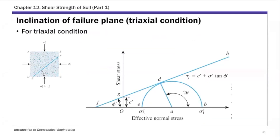Another thing to mention for the Mohr-Coulomb failure criterion is the inclination of the failure plane. This is for soil specimens subjected to triaxial conditions, where you have this combination of principal stresses, sigma 1 prime and sigma 3 prime. In that case, the failure plane angle theta can be found from the Mohr circle, similar to the previous Mohr circle example.